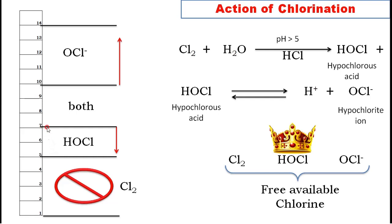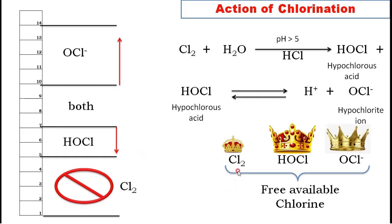If pH is less than 7, you will observe 100% HOCl in the water. When you add chlorine to water, it is necessary to maintain a pH slightly less than 7 — then you will have all HOCl and killing bacteria becomes very easy. HOCl is 80 times more powerful than Cl₂ and OCl⁻, which is why the crown is given to HOCl.